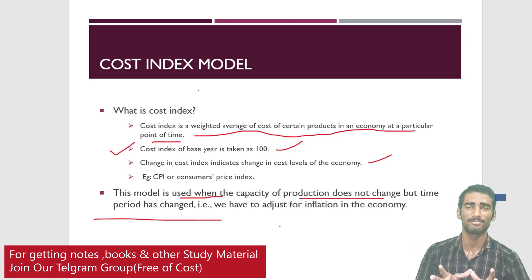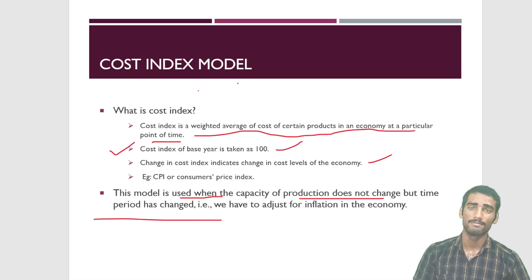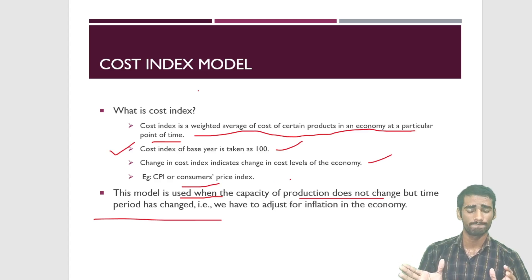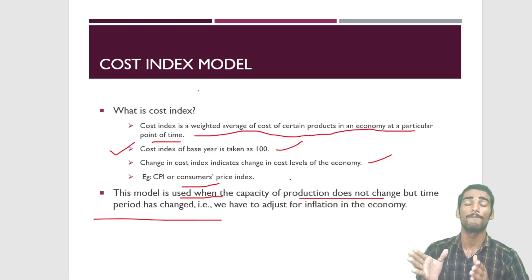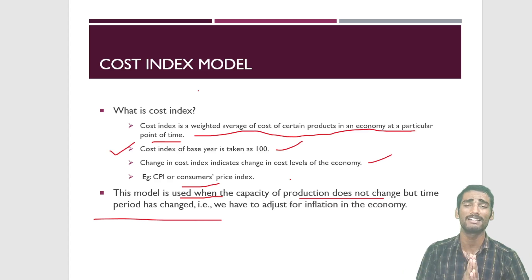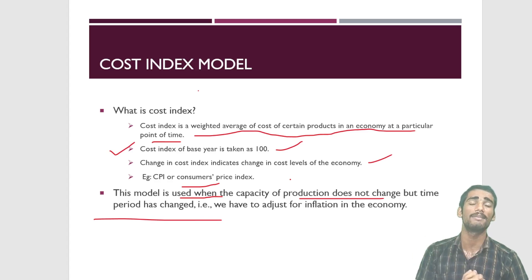For example, we can consider items like rice or wheat — the capacity of production is the same, but the time period has changed. That is why we apply the cost index model here, similar to the Consumer Price Index.